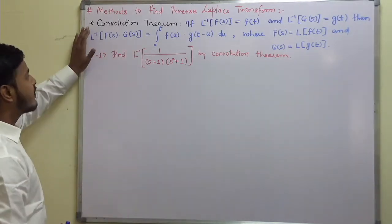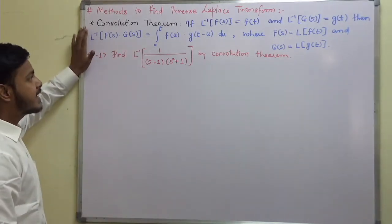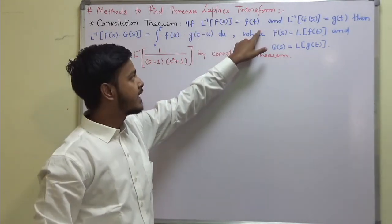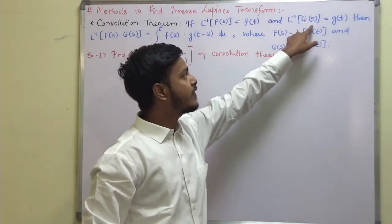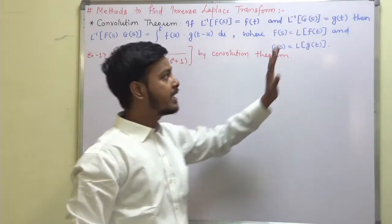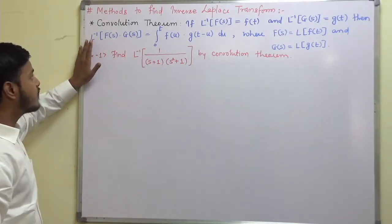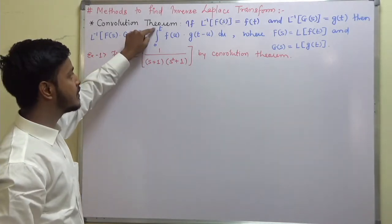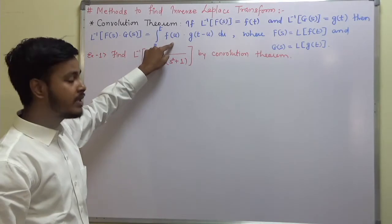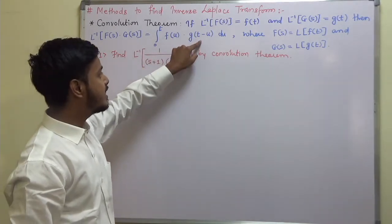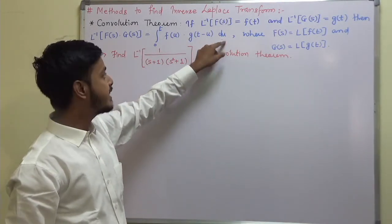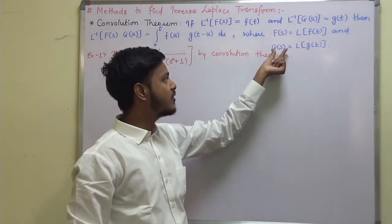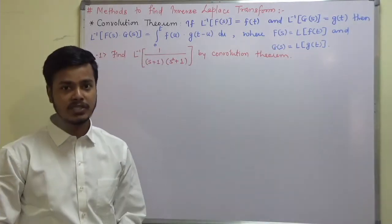The convolution theorem says: if L-inverse of F(s) is f(t), and L-inverse of G(s) is g(t), then L-inverse of F(s)·G(s) is equal to the integration from 0 to t of f(u)·g(t − u) du, where F(s) is the Laplace transform of f(t), and G(s) is the Laplace transform of g(t).